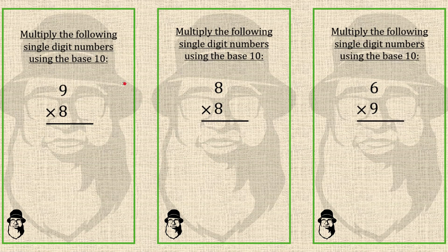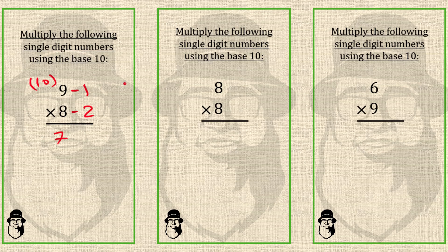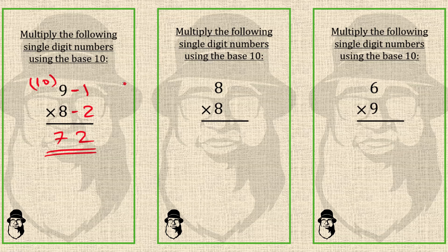9 is how far from 10? Our base is 10 here. So 9 is 1 far from 10 — we'll write minus 1. And 8 is 2 far from 10 — we'll write minus 2. Now we can do 9 minus 2, that is 7. That is the left part of the answer. Or we can do 8 minus 1, that is also 7. And the right part of the answer is 2 times 1 — we multiply the complements. So 9 times 8 is 72.